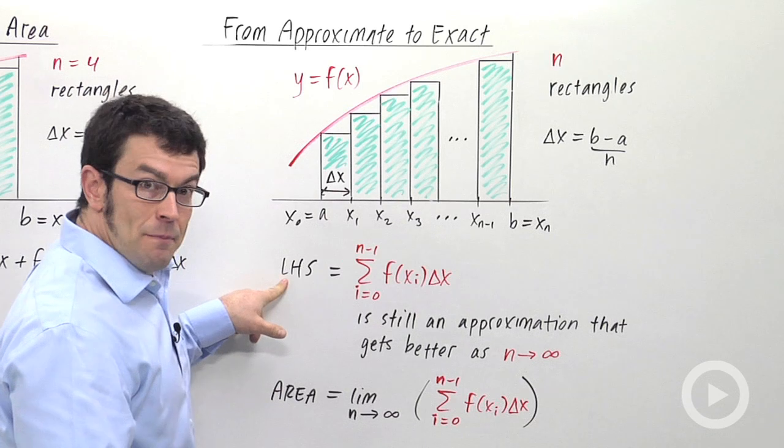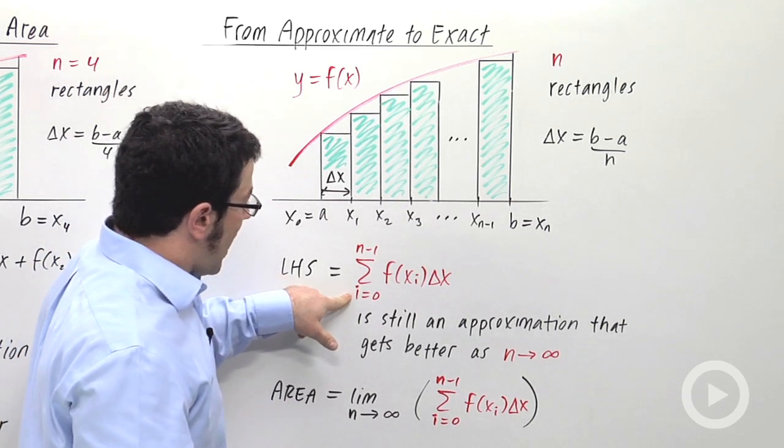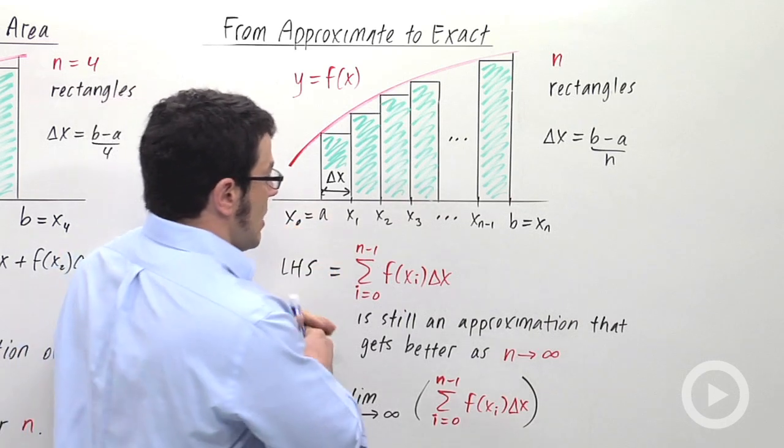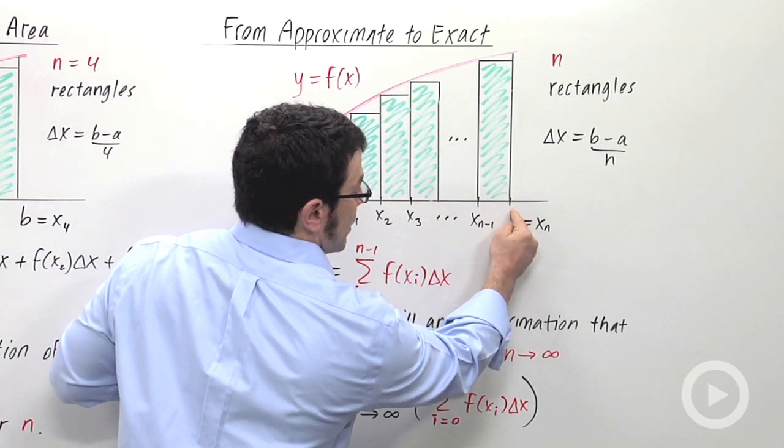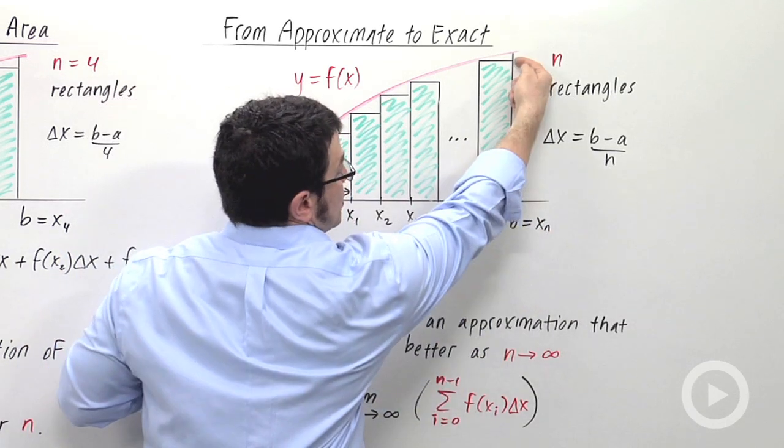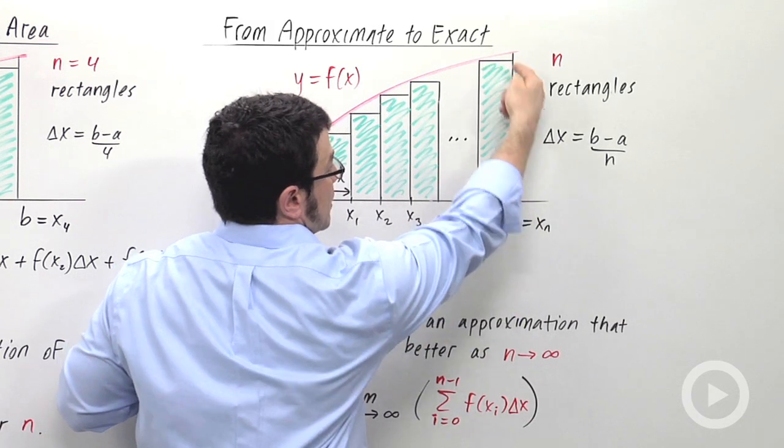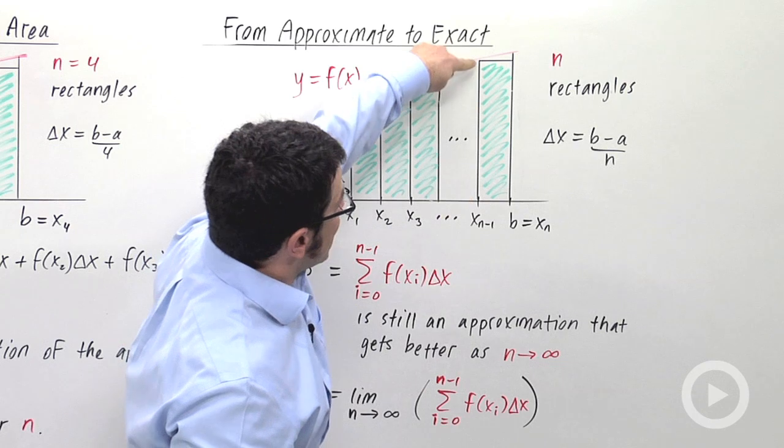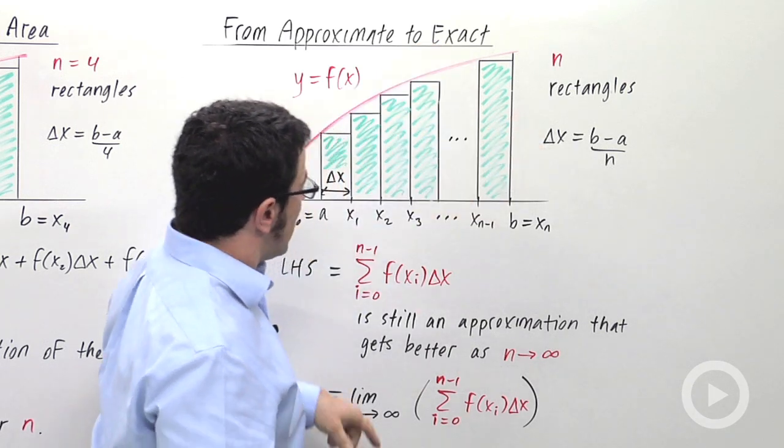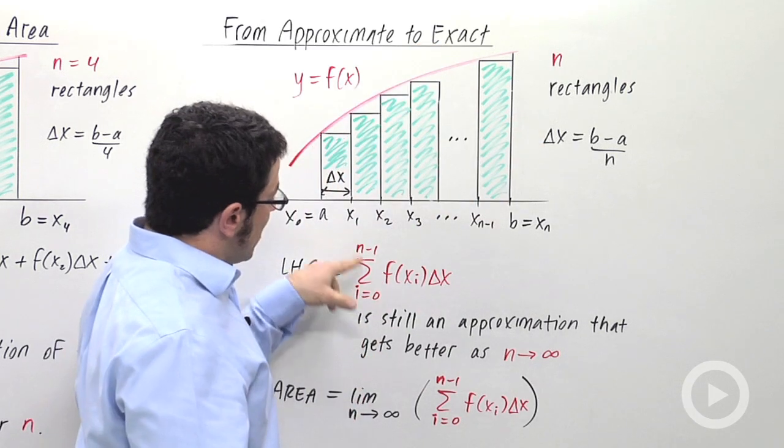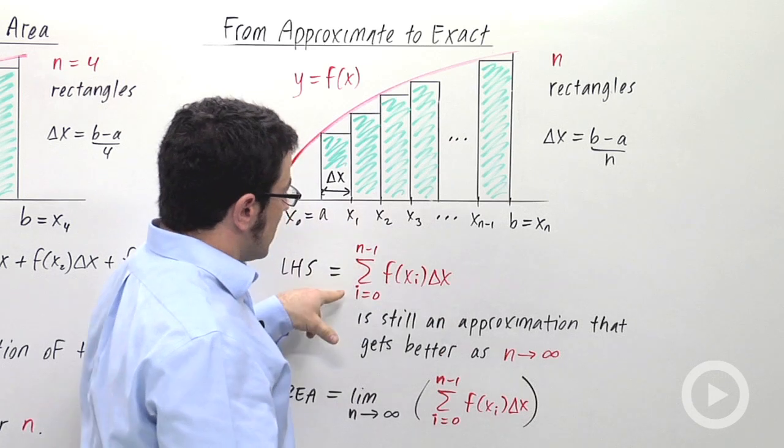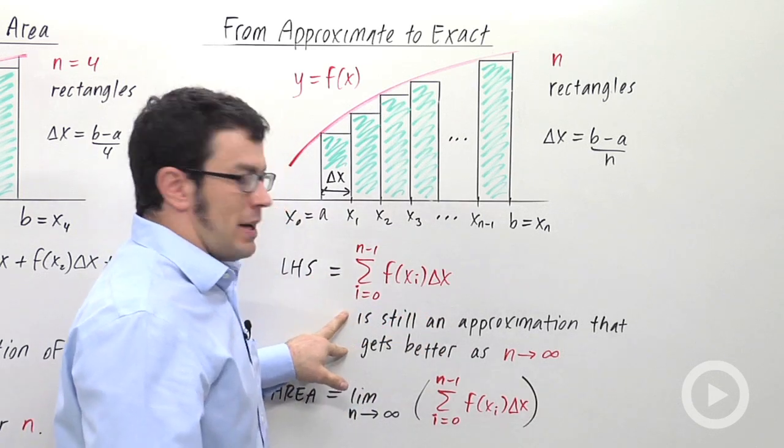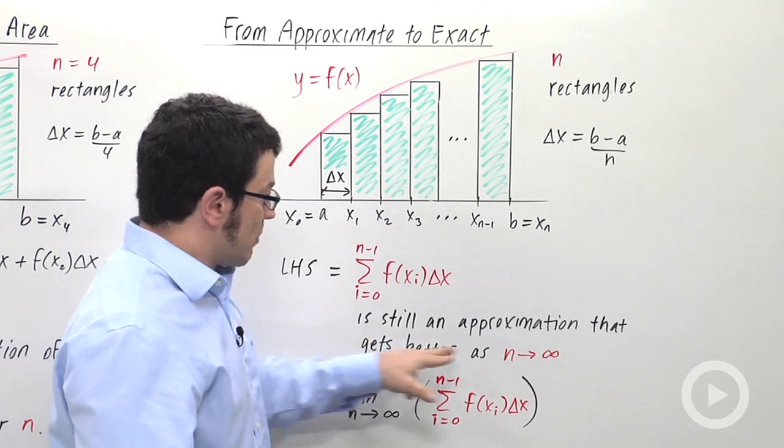The left-hand sum is now the sum from i equals 0 to n minus 1. Notice we don't go all the way up to n. x_n would be this number here, b. And we don't use that height to find the height of the rectangle. The last rectangle is f(x_{n-1}) times delta x. So anyway, we sum from 0 to n minus 1. This is n rectangles. And it's still an approximation. No matter how big n is, it's still an approximation. It just gets better and better as n approaches infinity.